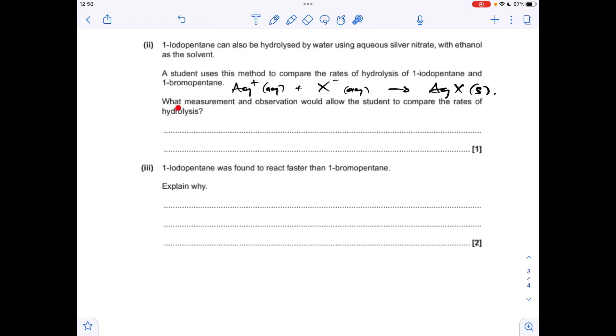Next part of the question, so what measurement and observation would allow the student to compare the rates of hydrolysis? So remember, in this reaction, a halide ion is produced, so it will be an iodide ion in the case of 1-iodopentane, it will be a bromide ion in the case of 1-bromopentane, so if you've got aqueous silver nitrate and ethanol there, it will detect the silver ions, it will react with the X- ions, and form a precipitate.